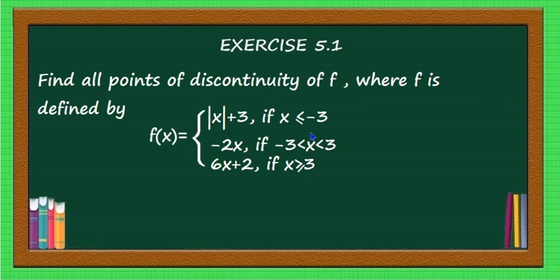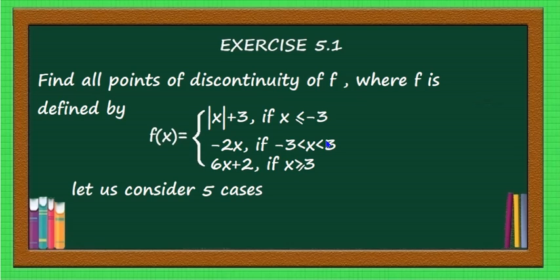The function is defined in a different way in different intervals. Up to -3 it is mod(x) + 3, from -3 to +3 it is -2x, and for x ≥ 3 it is 6x + 2. The function is defined for every real number. Let c be a real number. We will have 5 different cases.